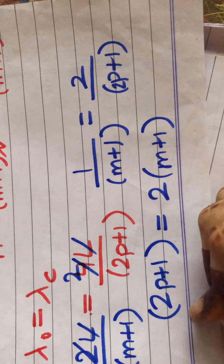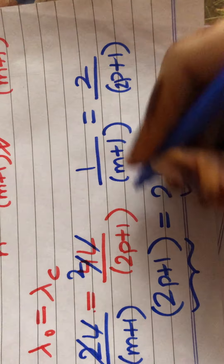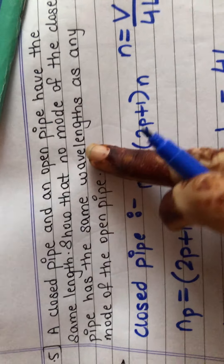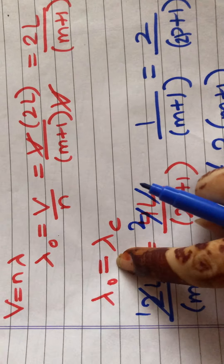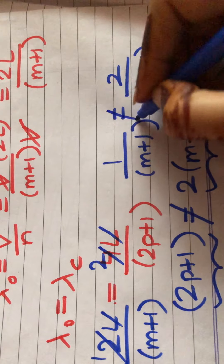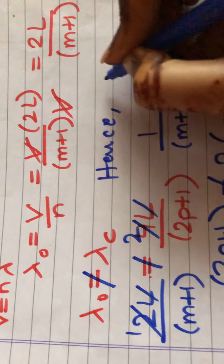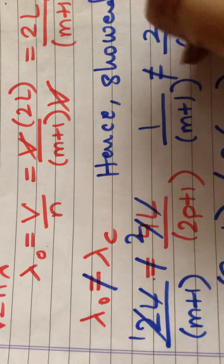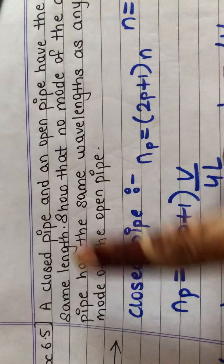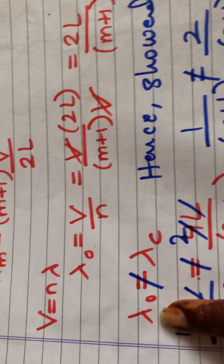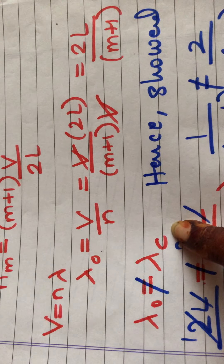Can we say left-hand side equals right-hand side? No. The left-hand side (2P+1) is always odd, while the right-hand side 2(M+1) is always even. They cannot be equal. Hence, we have shown that no mode of the closed pipe has the same wavelength as any mode of the open pipe. The wavelengths are not equal.